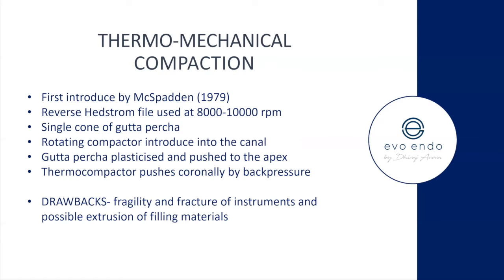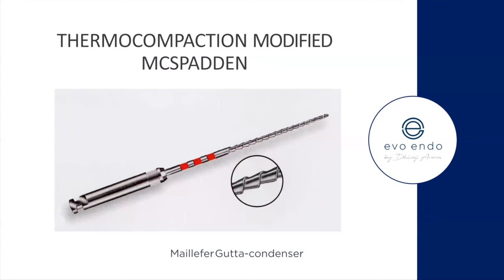With thermomechanical compaction, you put a GP cone in, the compactor by friction and heat melts the GP, pushes it to the side, and then while backing out, you place another GP cone in the middle — it's meant to help fill the canals a little better. Do I do this? No — its drawbacks are instrument fragility and fracture, and it's not possible to control your apical seal. I personally have never done this, but I didn't want to eliminate it as some of you may come across it in your FD practices.